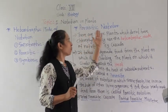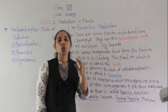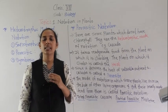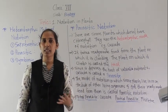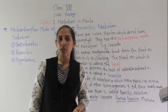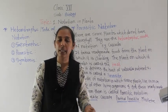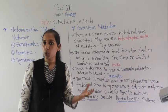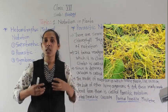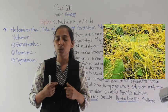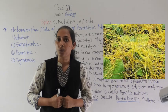Let's start the parasitic mode of nutrition. There are certain non-green plants which do not contain chlorophyll. For example, we can say the cascuta, or we can say the amarbel. This is a plant which is a non-green plant; it doesn't contain chlorophyll. It is yellow and has very long thread-like twines, and it gets coiled around the stem or the branches of other plants.